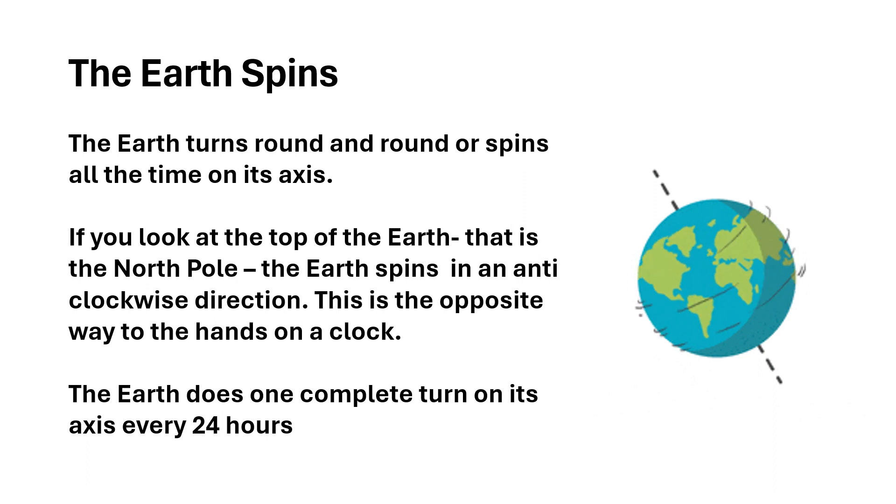The Earth spins: The Earth turns round and round or spins all the time on its axis. If you look at the top of the Earth, that is the North Pole, the Earth spins in an anticlockwise direction. This is the opposite way to the hands of a clock. The Earth does one complete turn on its axis every 24 hours.